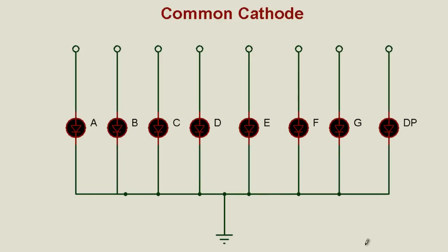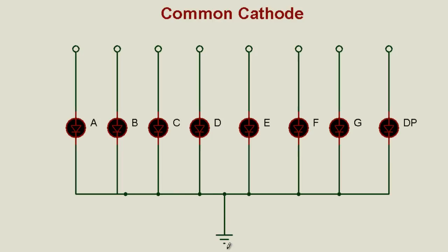In the common cathode configuration, all the internal cathodes of the LEDs are connected together and should be connected to ground. To switch on a specific segment, I supply a one from the microcontroller. For example, to switch on segment C, I supply a one from the microcontroller pin and current flows through the C segment to ground.